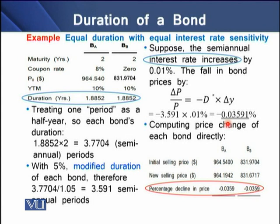To confirm this decline, we look at the initial and new selling prices. The new selling price for bond A is $964.1942, and for bond B the new selling price is $831.6717. Comparing the changes in prices, we see that both bonds have the same decline, which is negative 0.0359%.